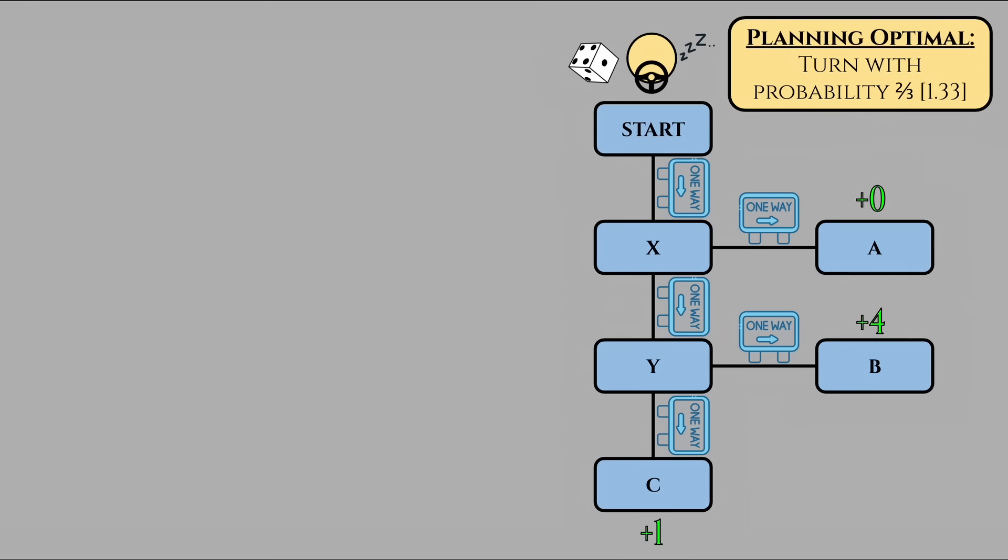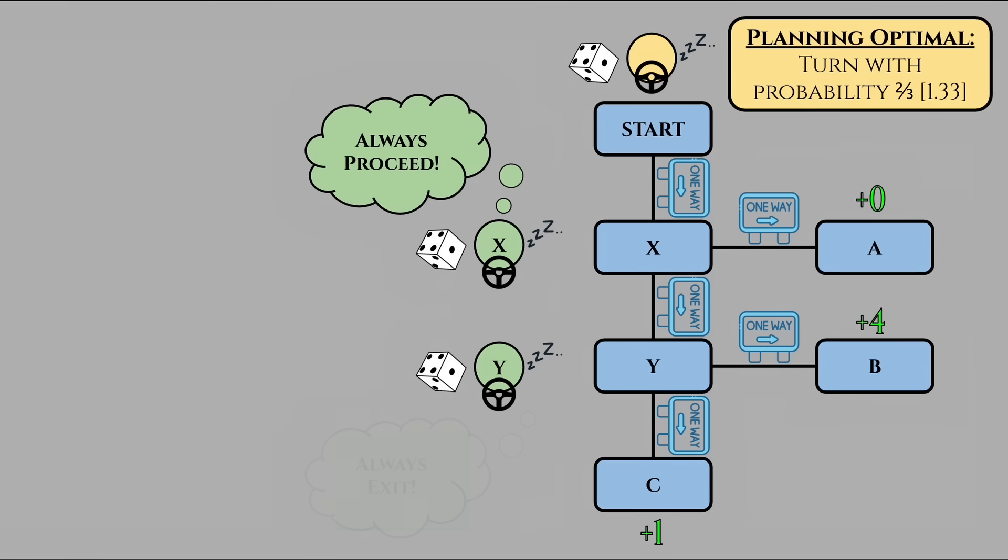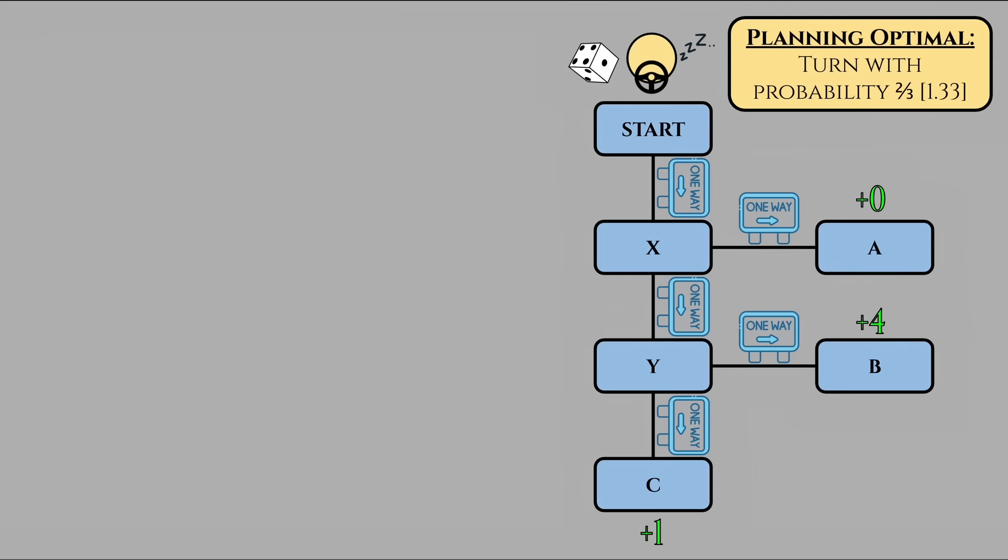For instance, without the absentminded clause, we could suppose that Dave X and Dave Y were two different players who had different strategies based on their locations. These locations might have their own equilibriums too. Here, it's always better to proceed at X and turn at Y. In this puzzle though, Dave X and Dave Y are not really two separate people who can communicate. They are the same single agent with no memory or distinguishing features for any intersection. Once Dave forgets whether he's at X or Y, he can't meaningfully choose a new equilibrium just for the second intersection.